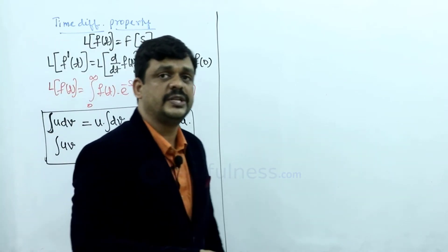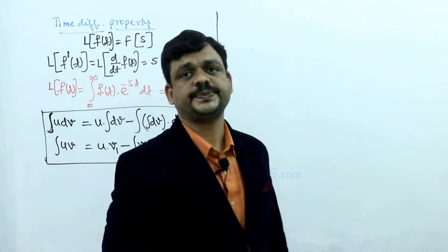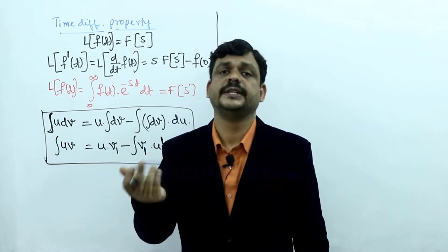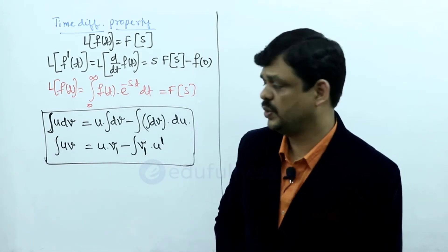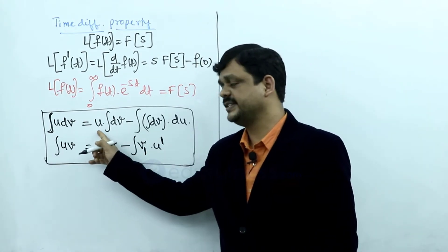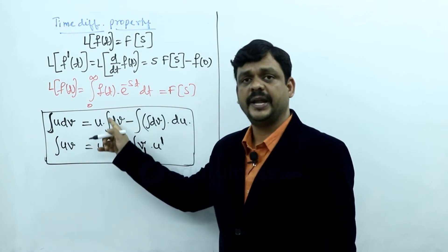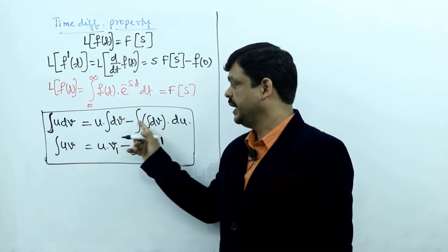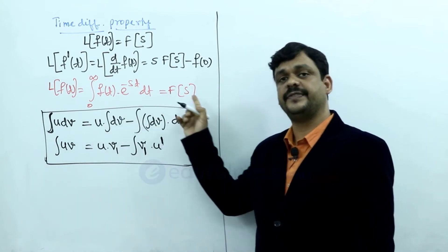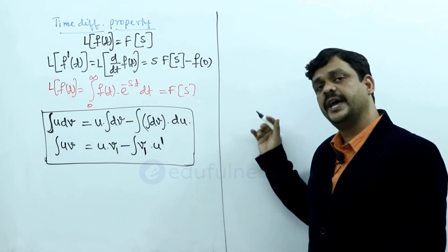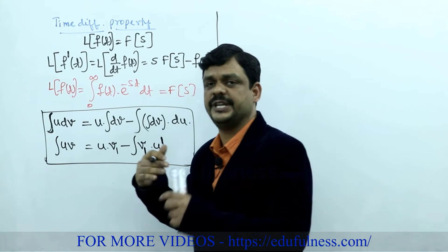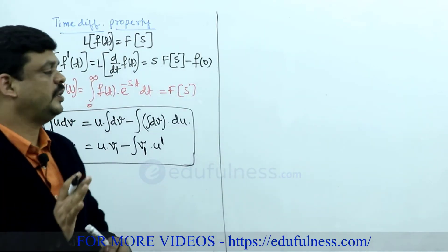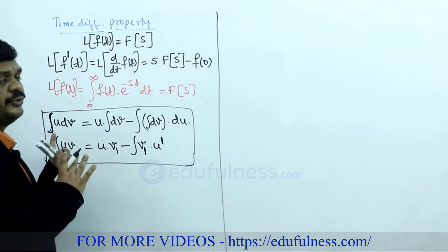Otherwise, we can use Bernoulli's rule also. Within the integration, two functions are defined, and then we apply Bernoulli's rule. Bernoulli's rule takes the first function and applies integration of the second function, then subtracts the integration of the second function times the differentiation of the first function, and so on, because it performs this operation a number of times. Here I have written the u dv formula: integral of u dv.